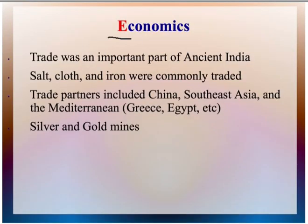Moving on to economics. Trade was an important part of ancient India. Salt, cloth, and iron are commonly traded. Trade partners included China, Southeast Asia, the Mediterranean, Greece, Egypt, and others. The Phoenicians most likely would not have been important traders with India, as they — as we learned last session — were the sea people. While India has rivers and is near water, they are not connected to the Mediterranean through water sources, so the Phoenicians most likely would not have traveled to them.